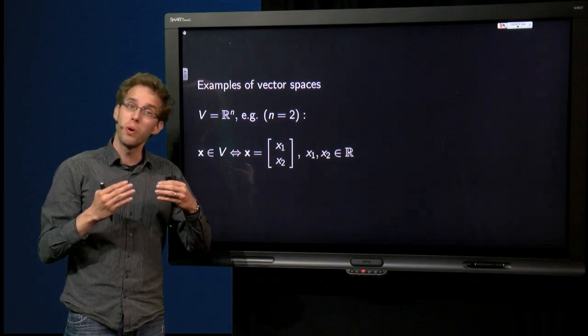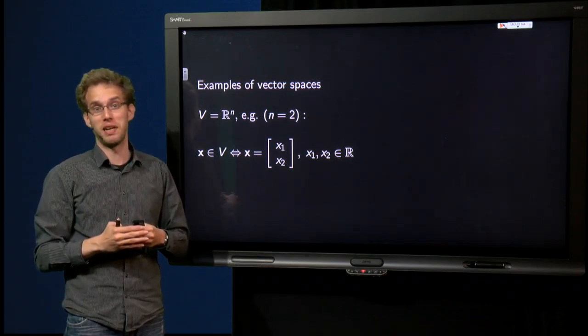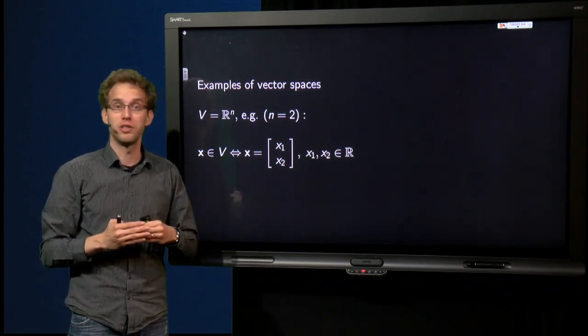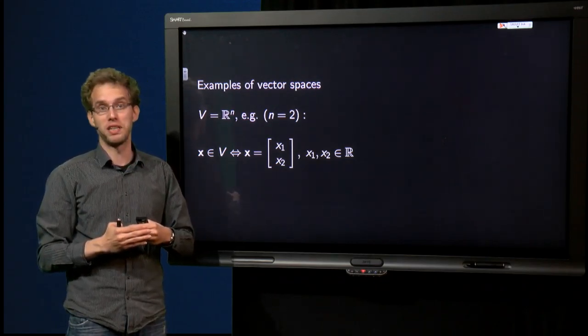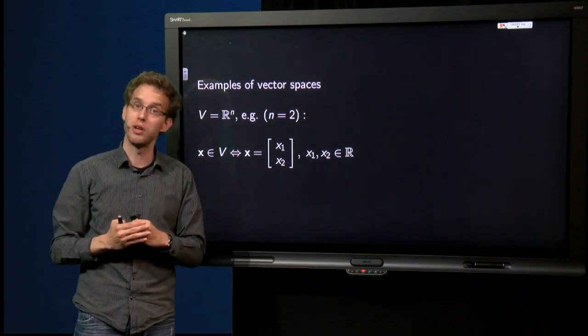So what are examples of vector spaces? In this video, we will see that apart from R^n, three other vector spaces exist. Let us have a look.